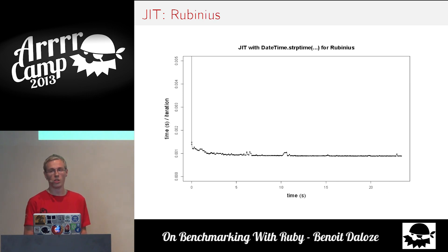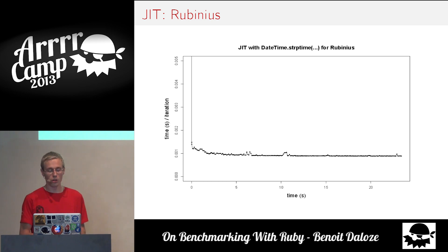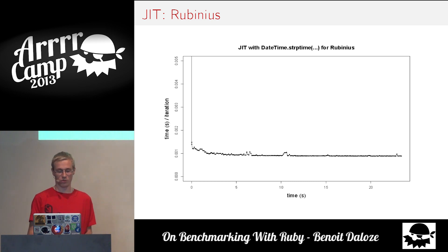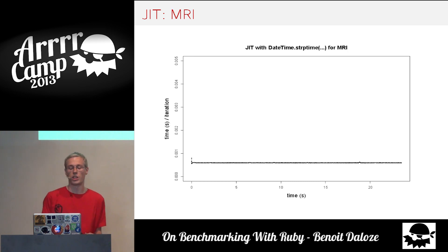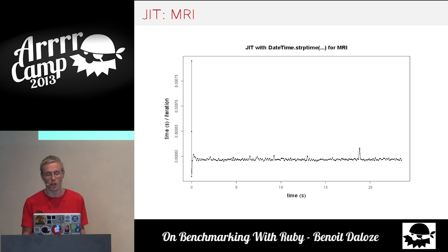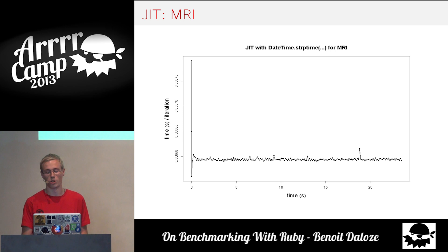If you look at JRuby, it gets stable sooner, but still the first iterations are wrong — the cache is not good and we need to warm things up. In MRI, you see much less of this effect because there is no JIT, but if you look carefully you see it changing a bit, although it's quite stable.